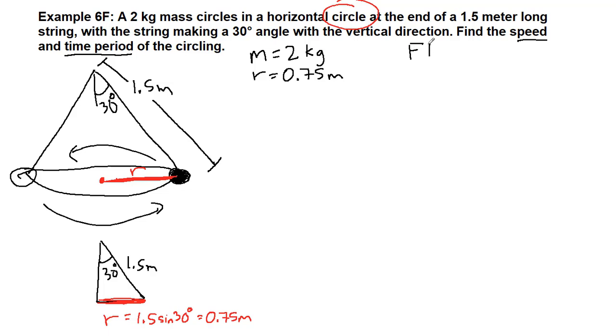We have gravity straight down, so gravity is mg, which is equal to 2 times 9.8, which is equal to 19.6 newtons.